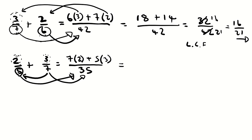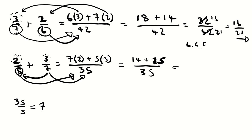By the way, to find how many times 5 goes into 35, just do 35 divided by 5 — the answer is 7. So continuing with the question: 7 times 2 equals 14, and 5 times 3 equals 15, with 35 at the bottom. So 15 plus 14 equals 29 over 35. We can't reduce this number any further, so just leave it as it is.